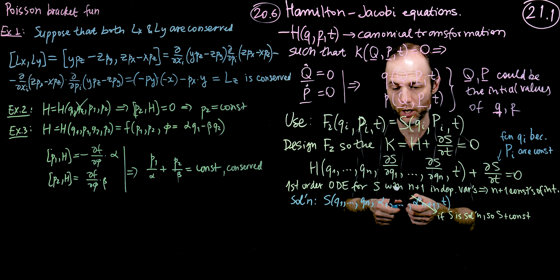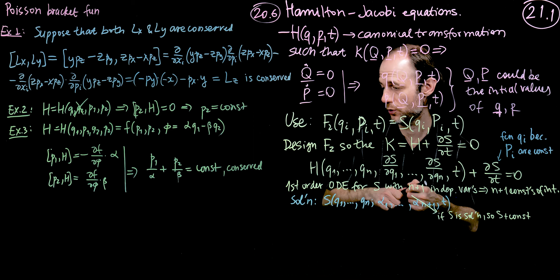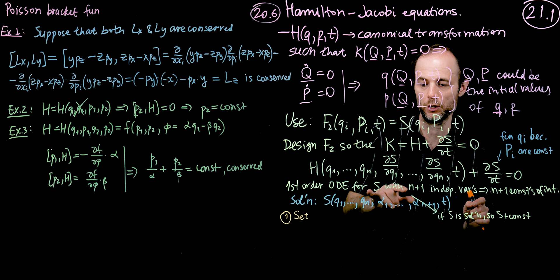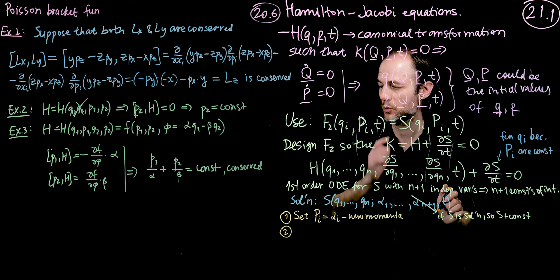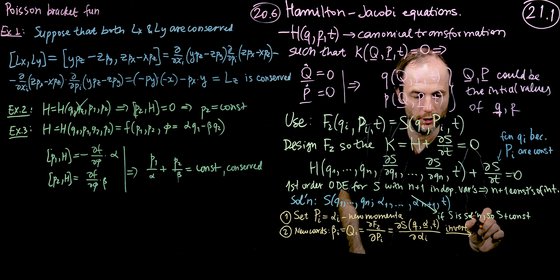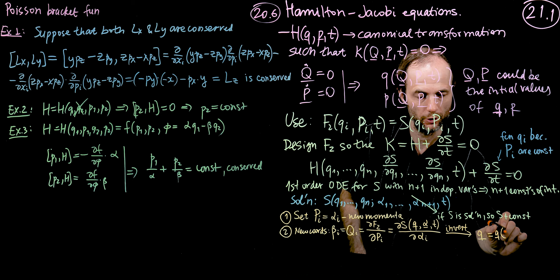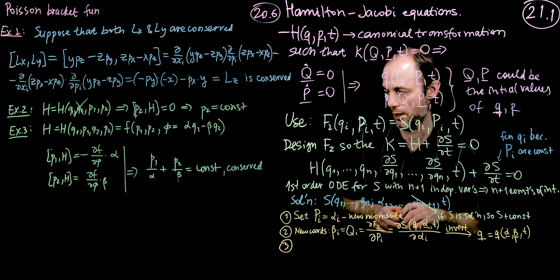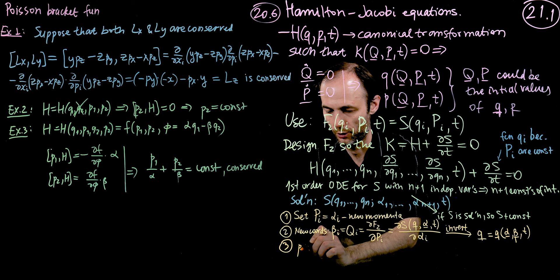So let us now figure out the algorithm by which we're going to solve the system. So let's start with the first step. We're going to set the new momenta to be equal to the constants of integration. These are new momenta. The next step is we're going to compute the new coordinates. And once we invert this relation, we're going to get the expression for q as a function of alpha, beta, and time, where alpha and beta are the new momenta and coordinates.